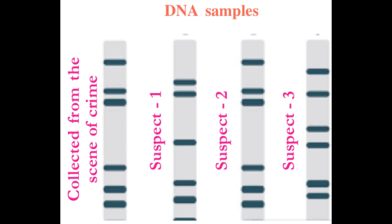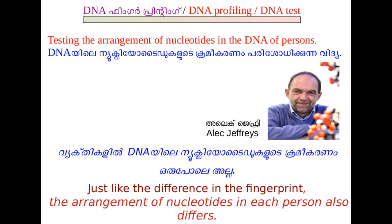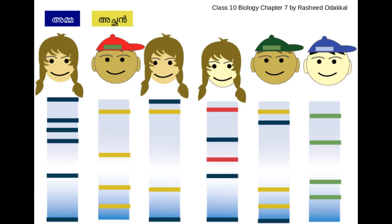DNA fingerprinting is a technology of testing the arrangement of nucleotides in the DNA of persons. The idea of DNA profiling was proposed by Alec Jeffries, who found that the arrangement of nucleotides in the DNA of each person differs, though the arrangement among close relatives has many similarities.